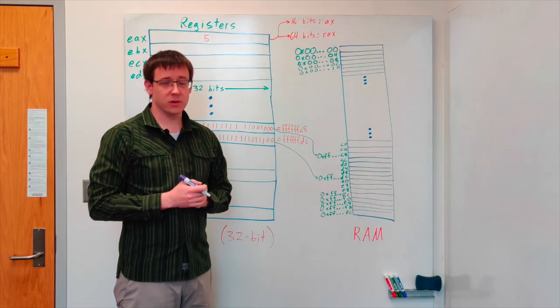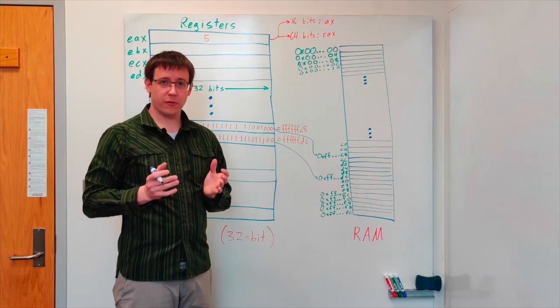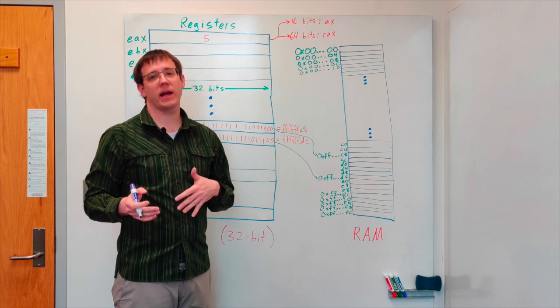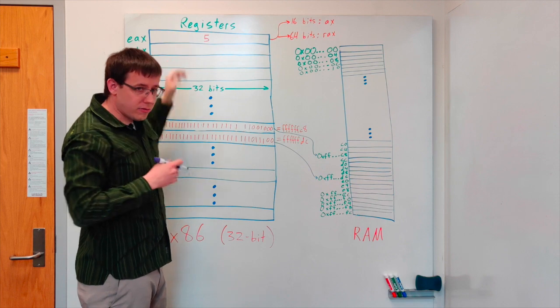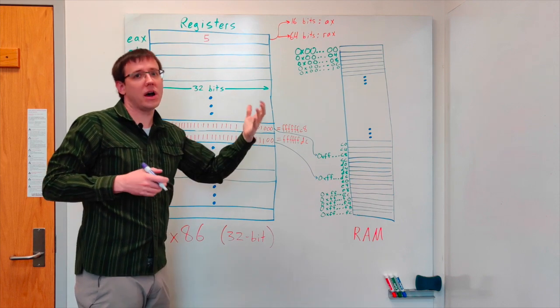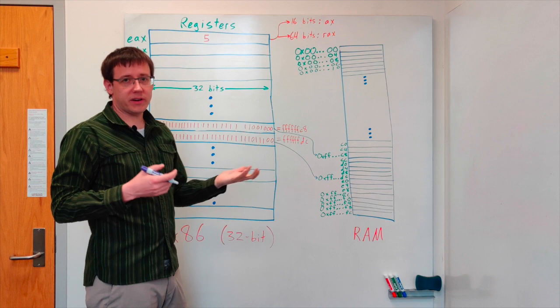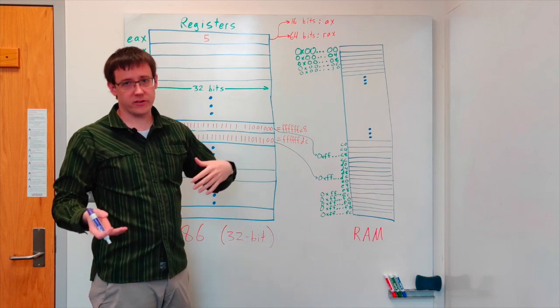We'll talk about lots more assembly instructions later but first a few basics on moving data around. Suppose that the A register is currently holding the number 5, represented in 32-bit 2's complement binary, and we want to copy that value into the B register.